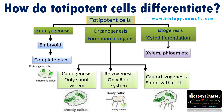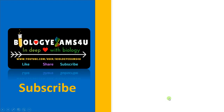So these are the ways by which totipotent cells differentiate in in vitro plant tissue culture. Hope you understand the concept. Thank you so much for your support. You are with biologyxsums4u.com.